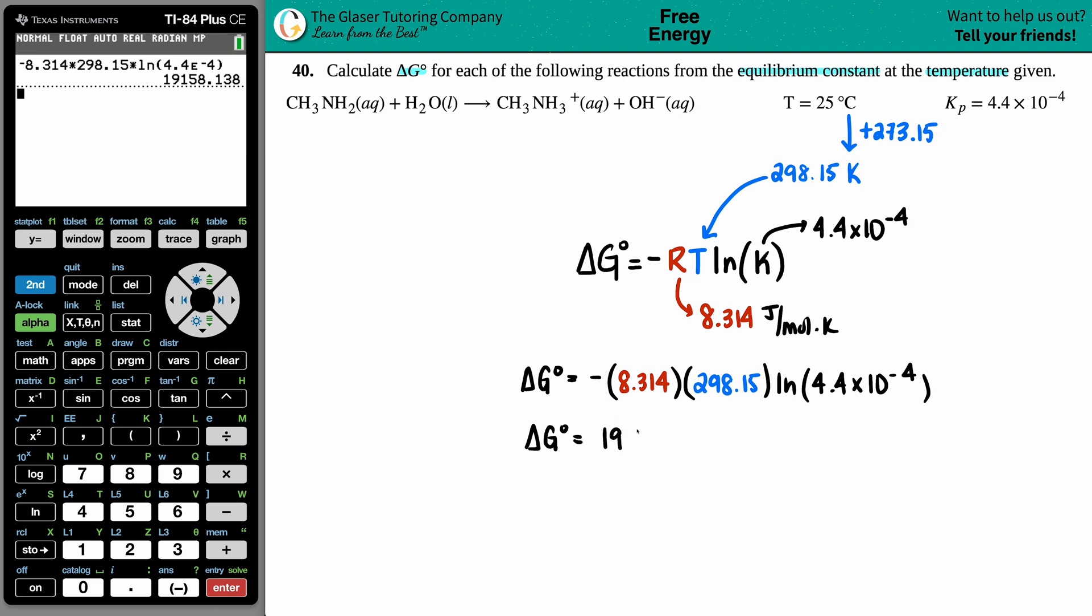19,150.158. The units is the units that did not cancel out. So, this would be joule per mole.